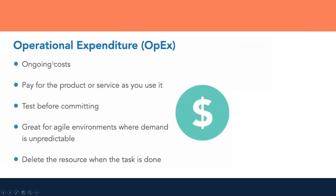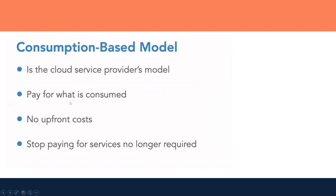Operational expenditure (OpEx) is the ongoing cost. On-premises operational cost is really high compared to the cloud. In cloud, we have a consumption-based model — you pay only for the services you are using. If you are not using them, there is no upfront cost. You pay the bill on a monthly basis and only for the services you are actually using.